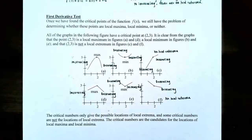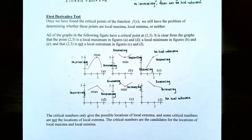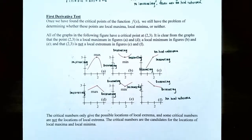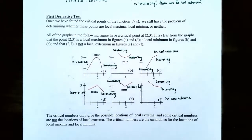Now we're ready to talk about the first derivative test. Once we find critical points for f(x), we still need to determine: are they a local max, a local min, or maybe neither? All of the graphs in the following figure have a critical point at (2, 3). The point (2, 3) is a local maximum in figures a and d, a local minimum in figures b and e, and neither a local max nor a local min in figures c and f.